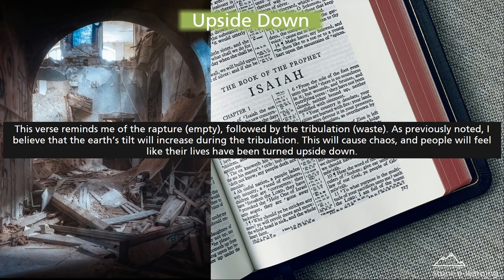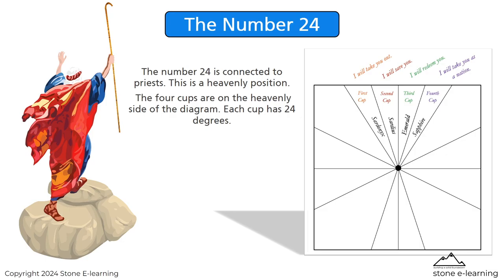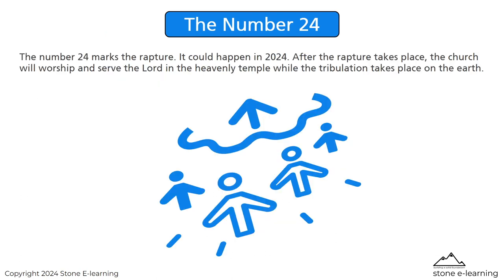This will cause chaos and people will feel like their lives have been turned upside down. The number 24 is connected to priests — this is a heavenly position. The four cups are on the heavenly side of the diagram, and each cup has 24 degrees. The number 24 marks the rapture; it could happen in 2024. After the rapture, the church will worship and serve the Lord in the heavenly temple while the tribulation takes place on the earth.